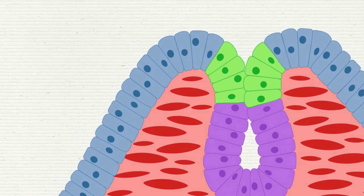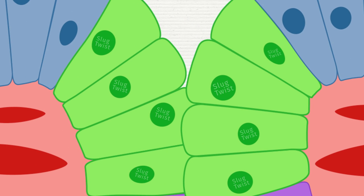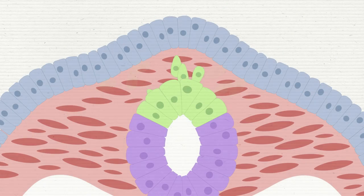These are Snail and Twist. The neural crest specifiers are very important as they control neural crest behavior from epithelial to mesenchymal transition, migration, and differentiation.